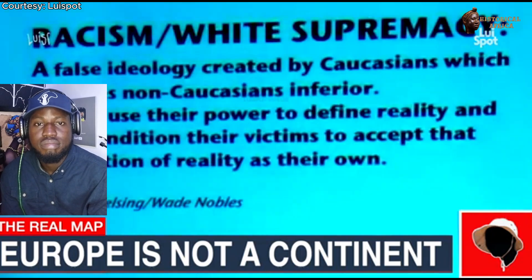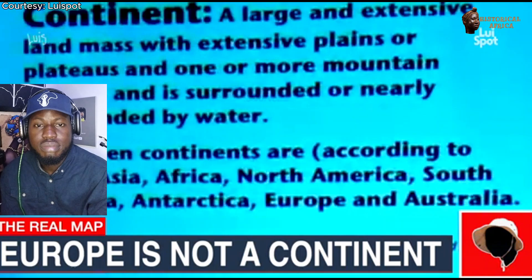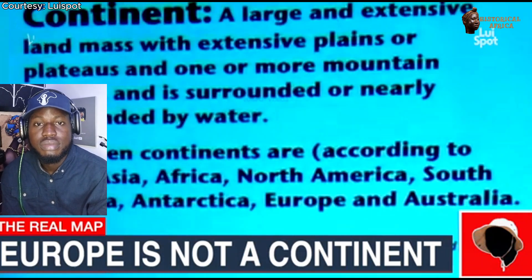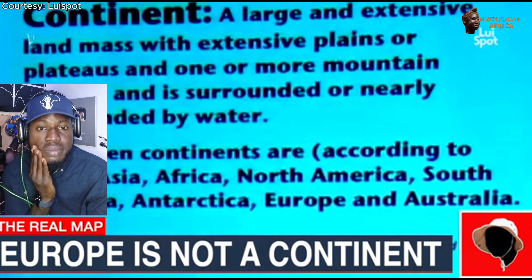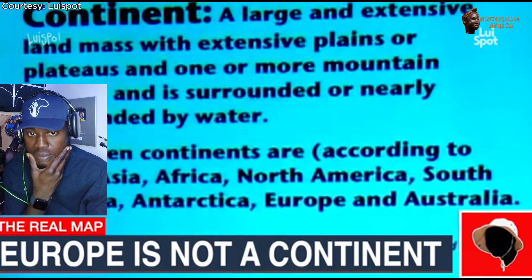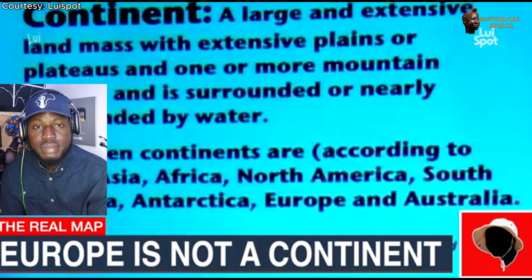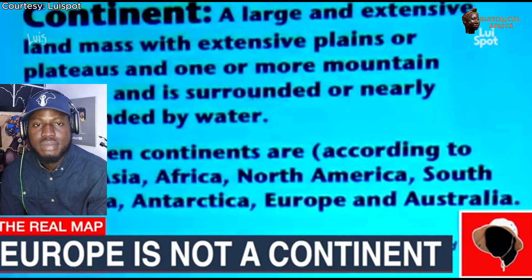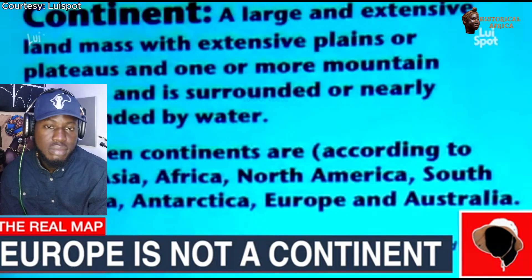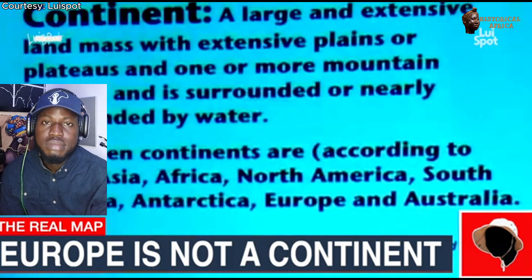We have to be very clear about language so that we can have intelligent discussions and make intelligent arguments about our points of view. A continent is defined as a large and extensive landmass with extensive plains or plateaus and mountain ranges, surrounded or nearly surrounded by water. The seven continents, according to size, are Asia, Africa, North America, South America, Antarctica, Europe, and Australia.